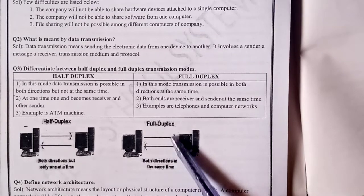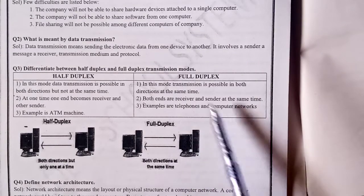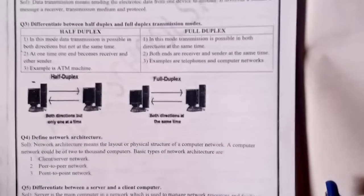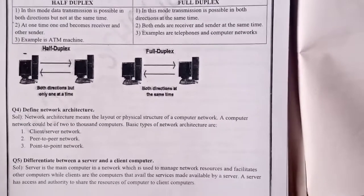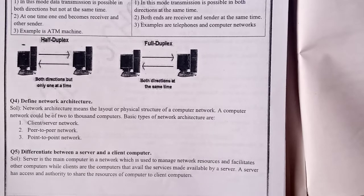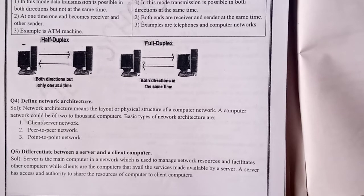Next question: Define network architecture. Network architecture means the layout of the physical structure of a computer network. A computer network could be of two to two thousand computers. The basic types of computer network architecture are client-server network, peer-to-peer network, and point-to-point network.